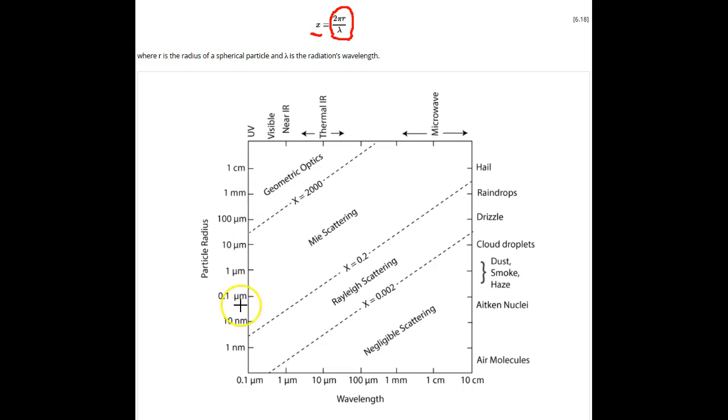The graph of the particle radius and wavelength with different size parameters begins to make more sense when we talk about how different size parameters affect scattering.